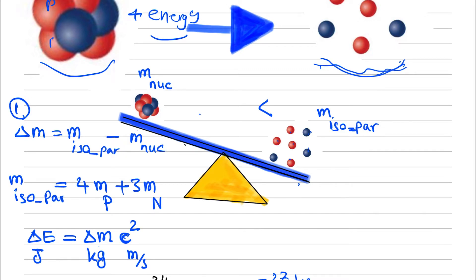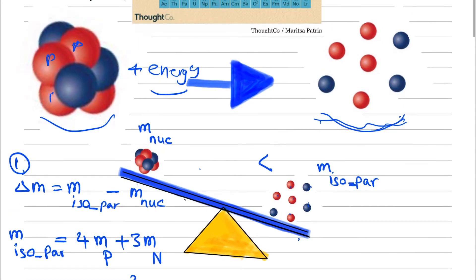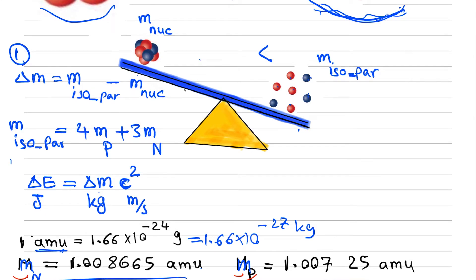This amount of energy created by the mass defect is called binding energy. Therefore, binding energy is the amount of energy a nucleus requires in order to break apart into its constituent particles. In order to calculate the binding energy, we need to perform two steps: first, calculate the mass defect of the nucleus, and then calculate the binding energy using the Einstein mass-energy equation.